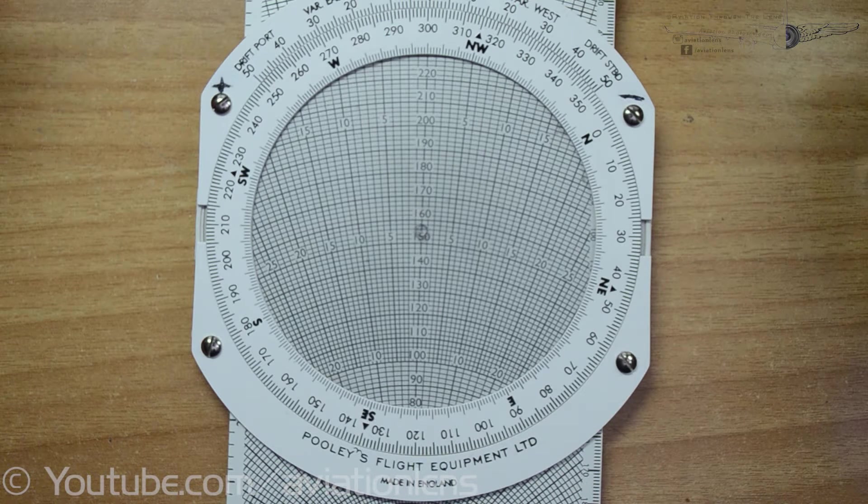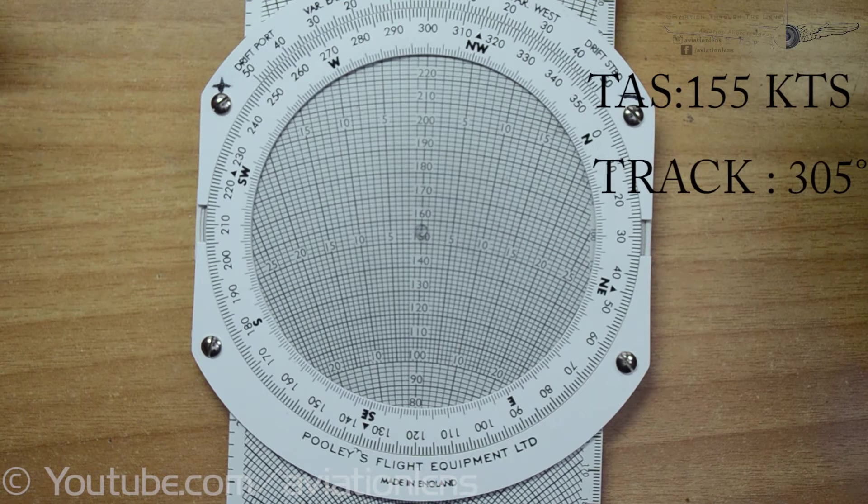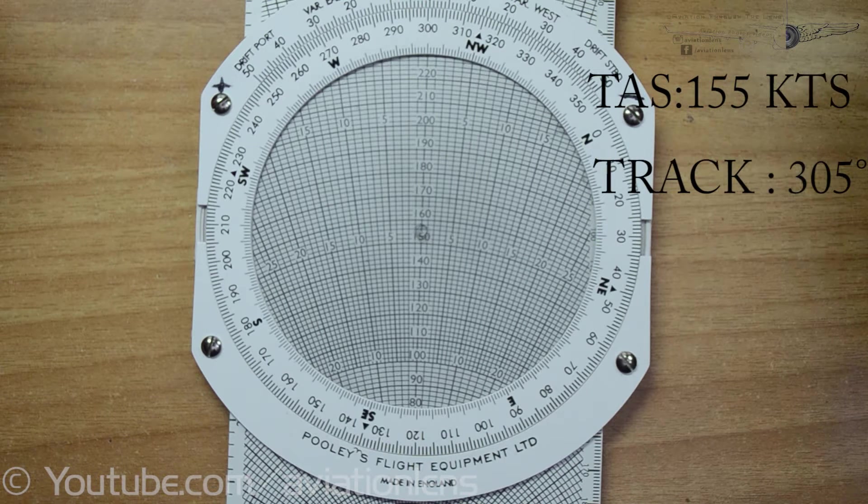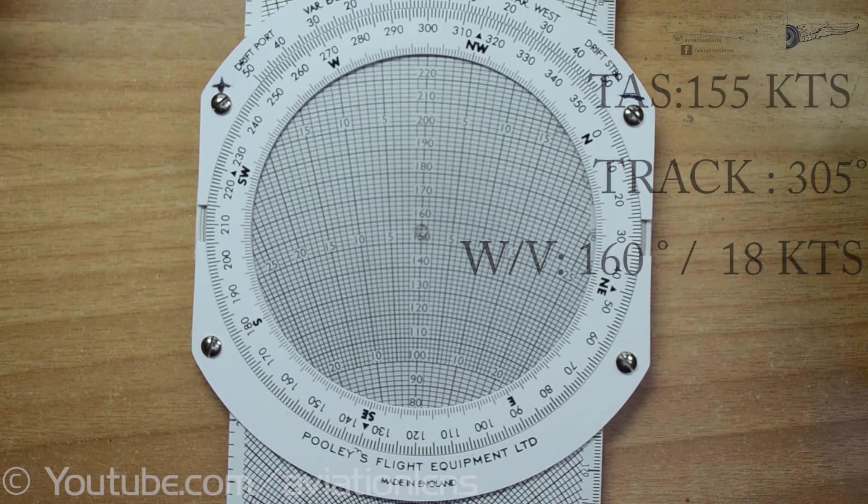For this example we have TAS of 155 knots, track is 305 degrees, wind is coming from 160 degrees and the velocity of the wind is 18 knots.